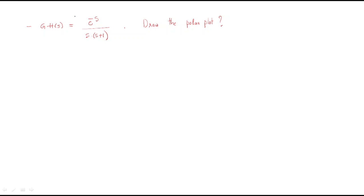Hello everyone. In this session we will discuss a polar plot problem. The open loop transfer function has e^(-s). Up to now we discussed about poles at origin and finite poles and zeros added to the transfer function. Here a new problem is introduced: e^(-s). We follow the same procedure.